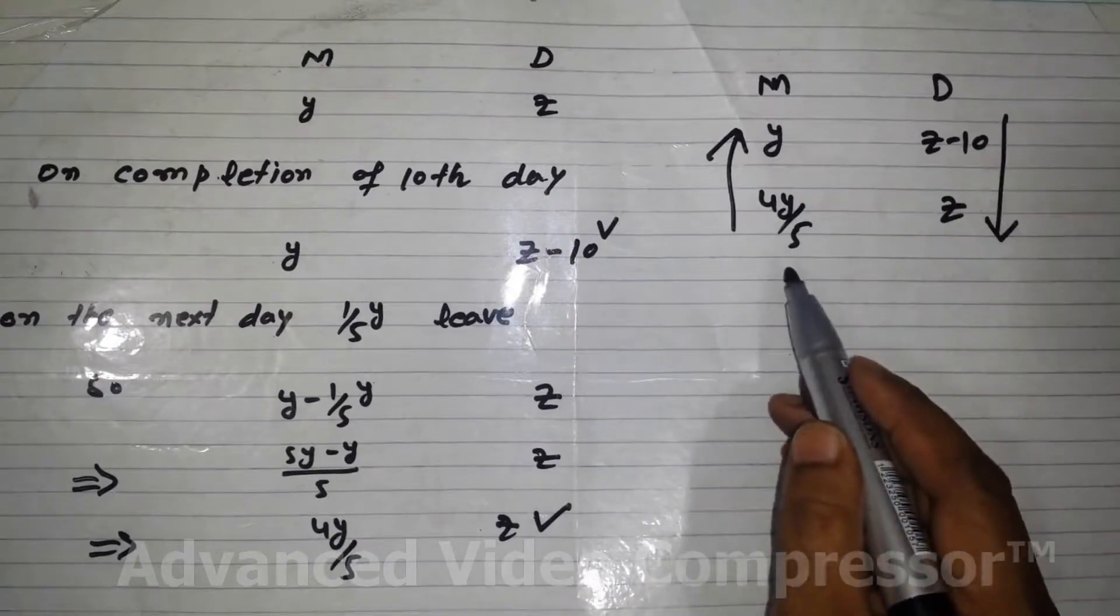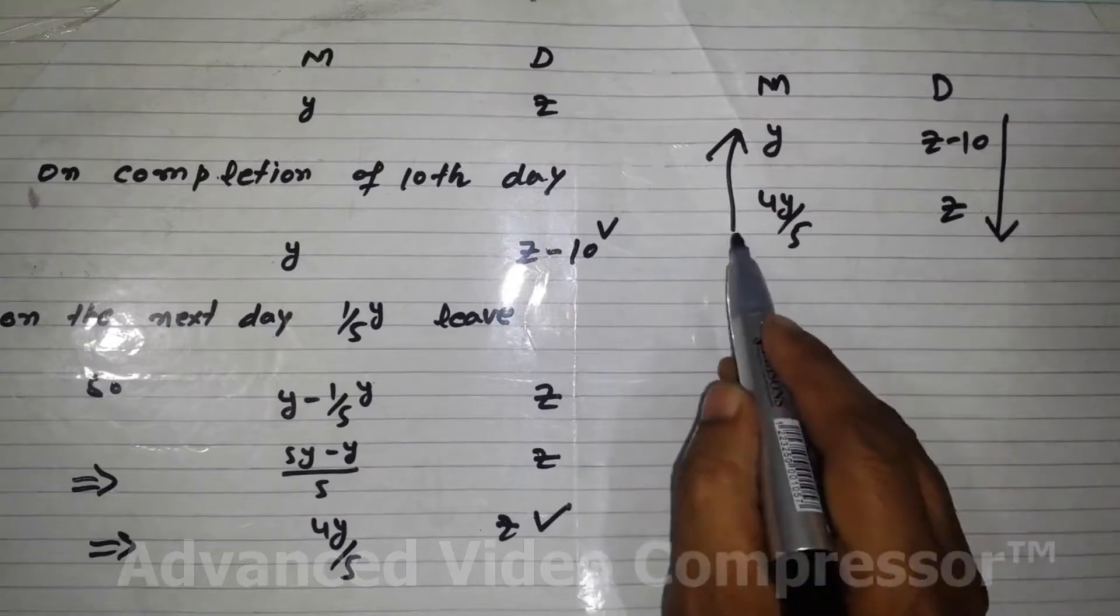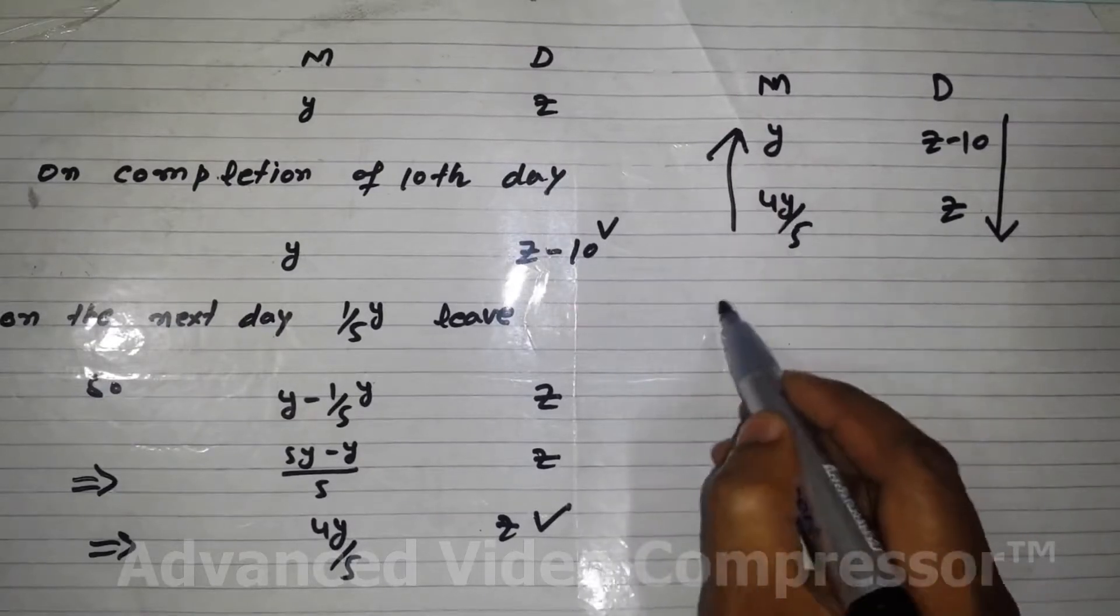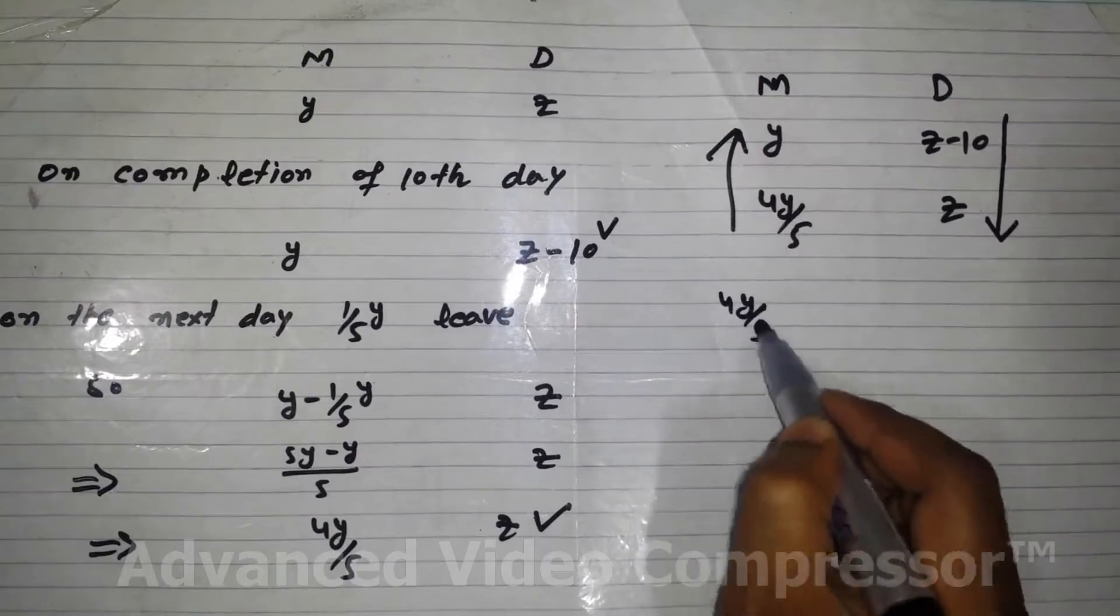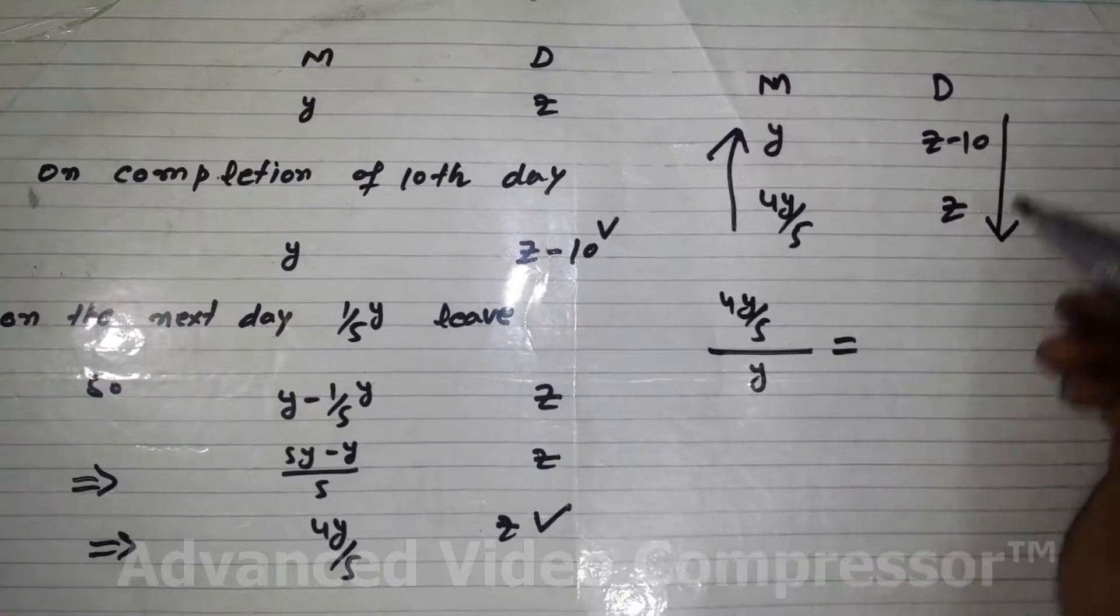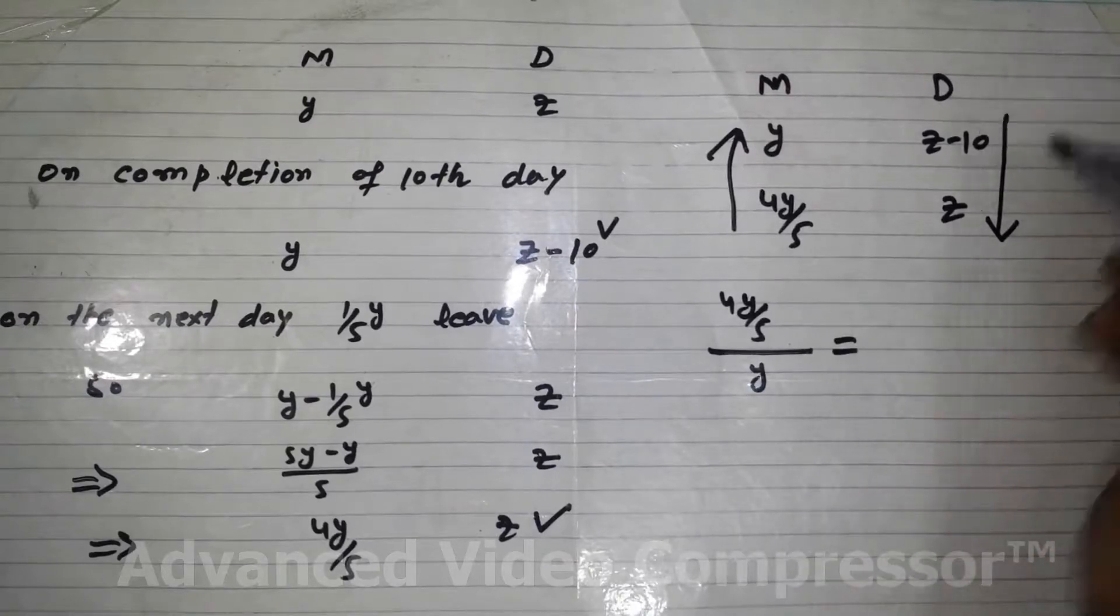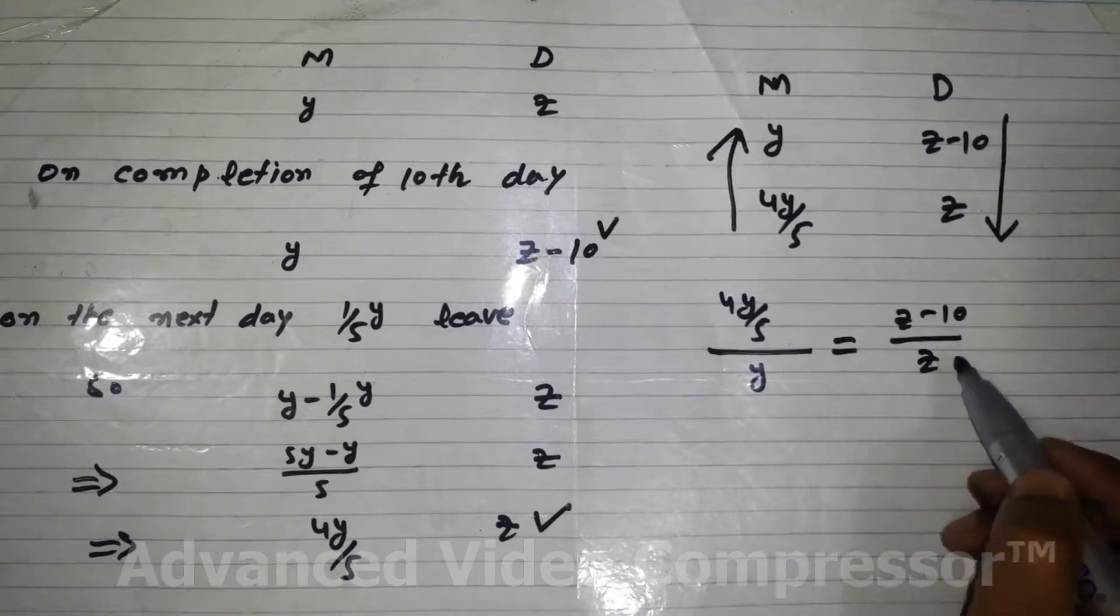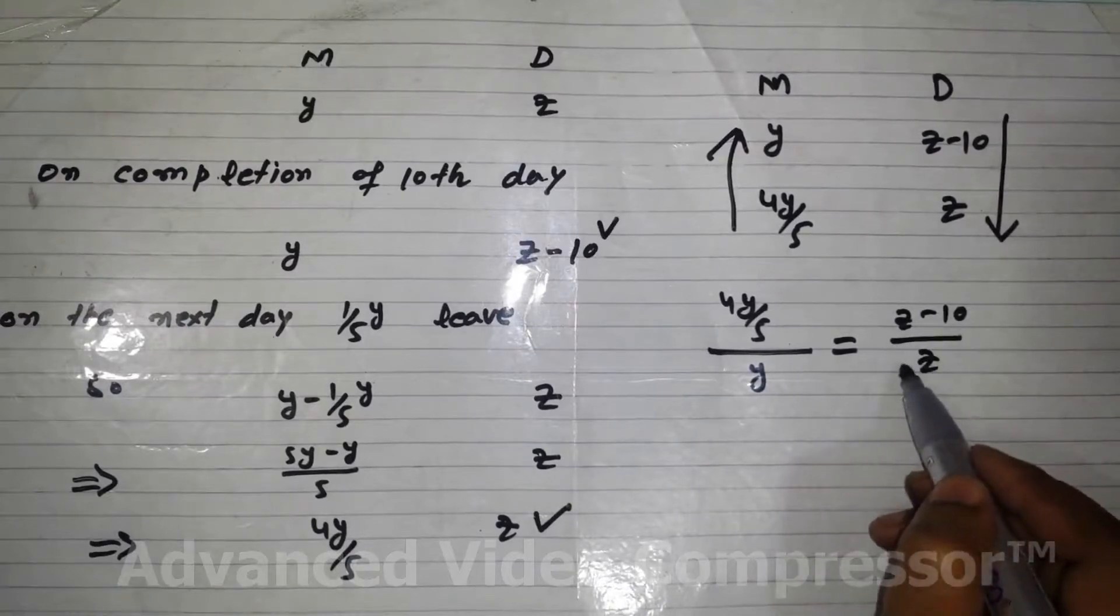Now we simplify this. From the tail of the arrow we go upside. First we write this term 4Y over 5 and over Y. And here we write Z minus 10 first and then Z. Now we multiply this Z here and this Y on the other side.